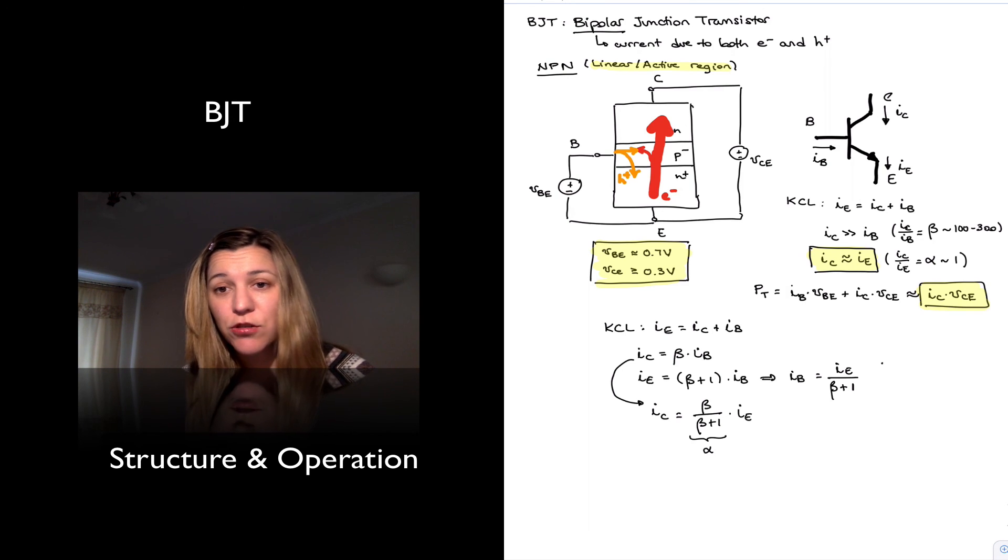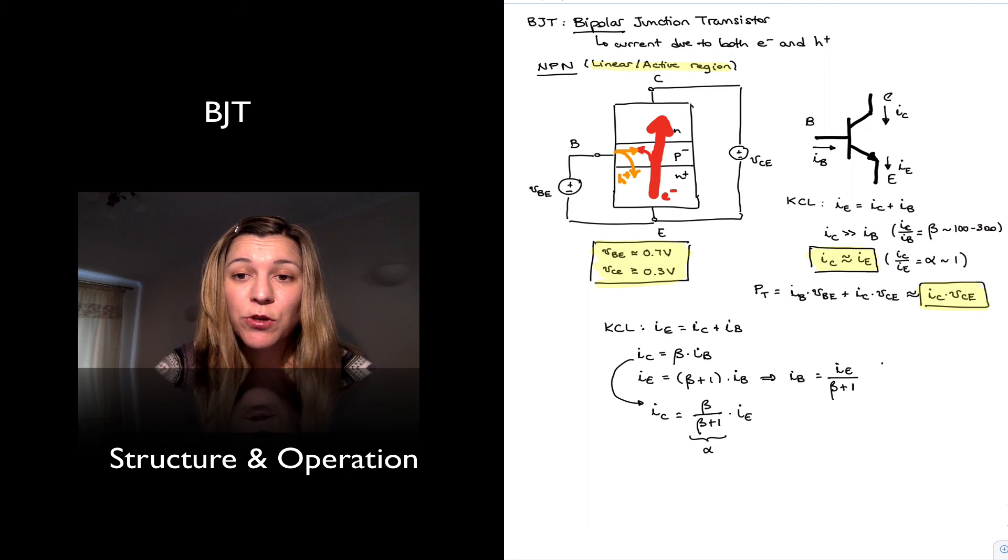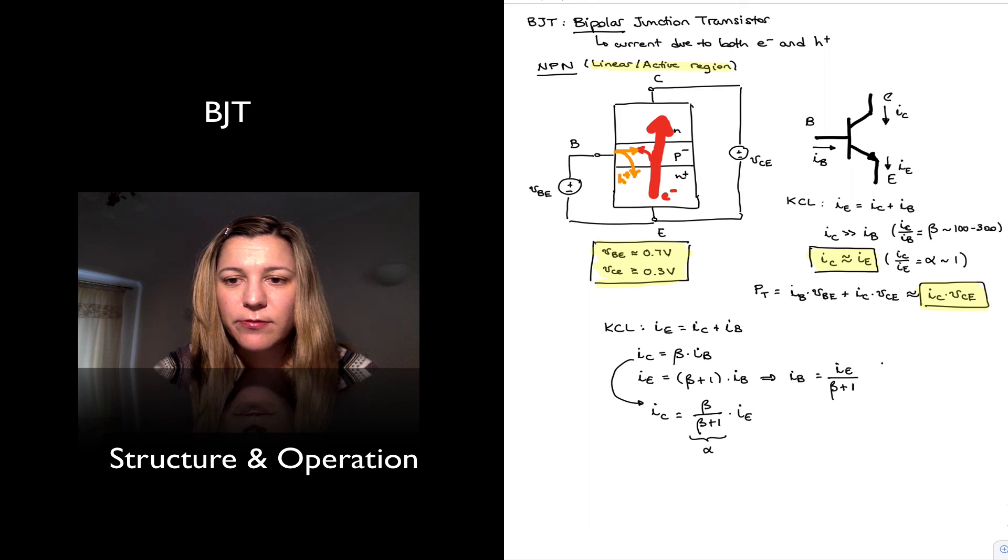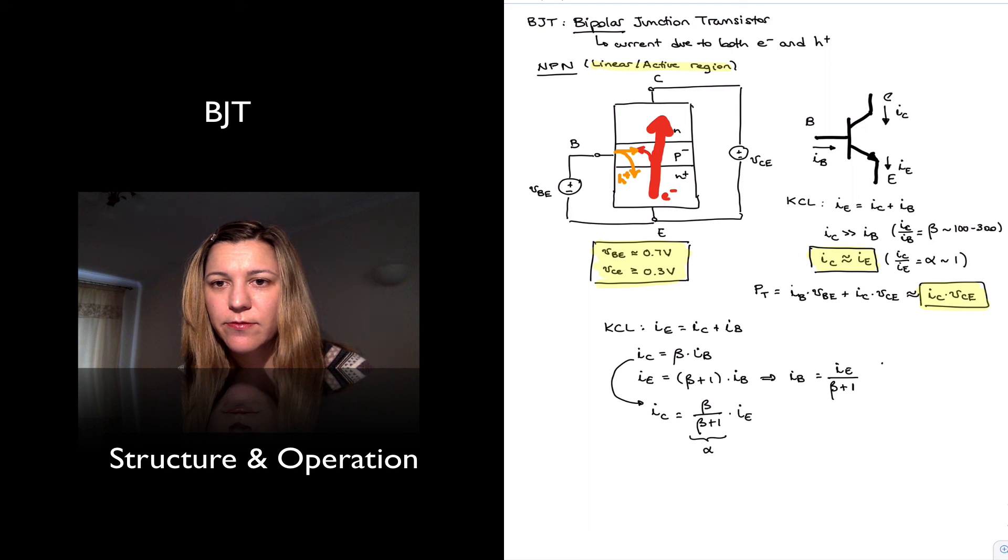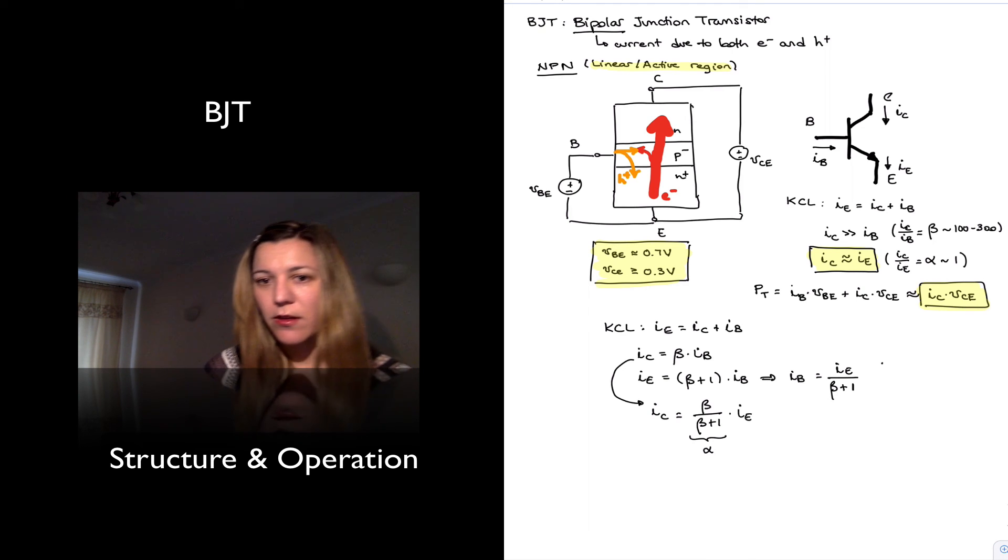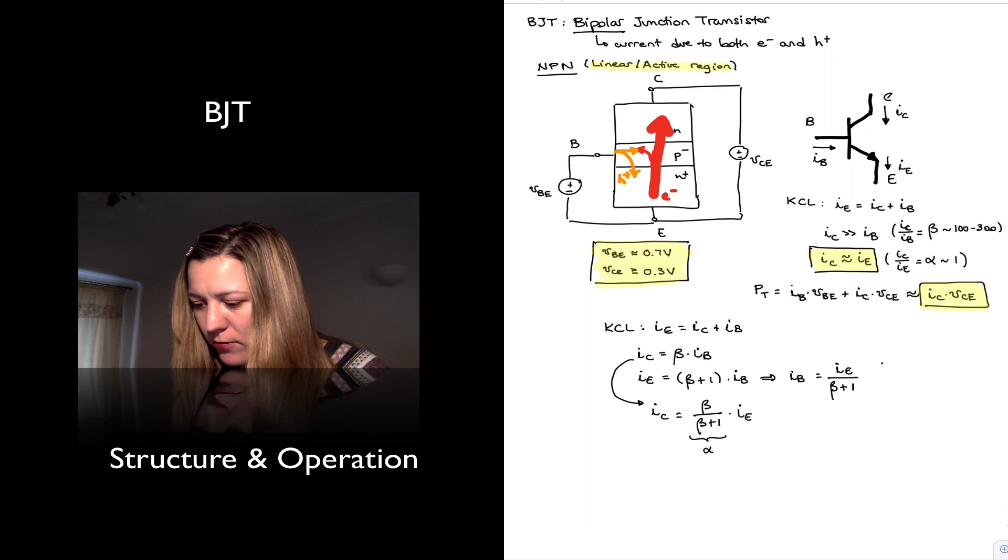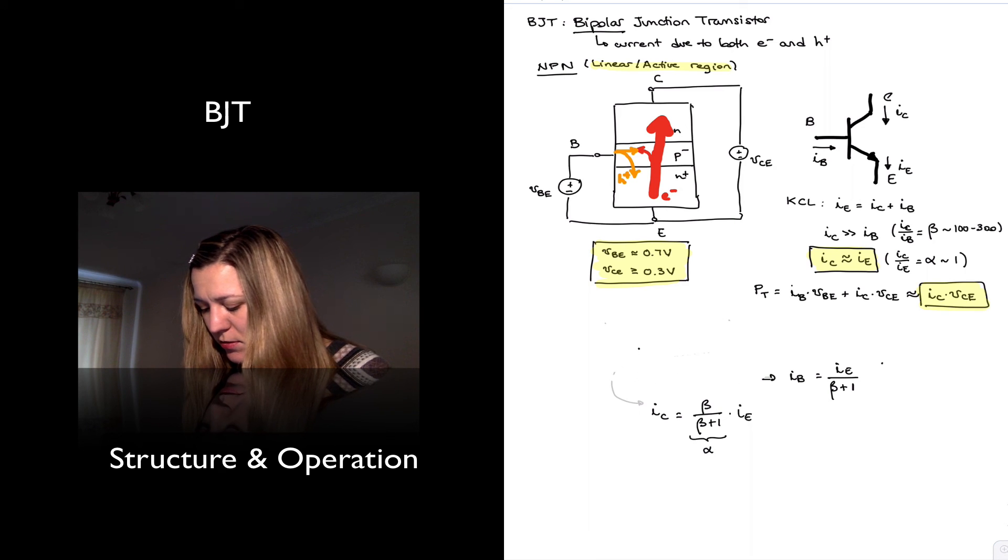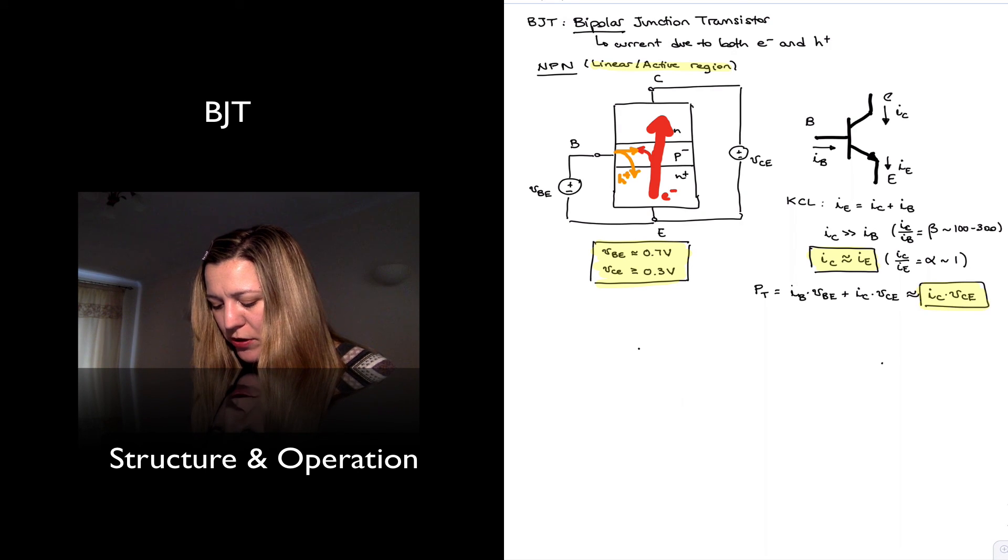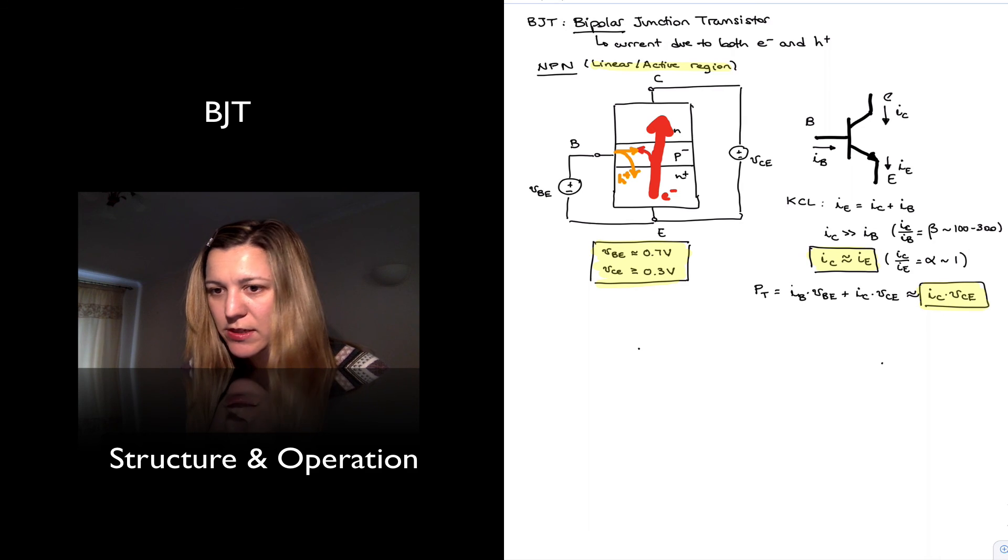Okay, and this is the structure and basic operation in the linear region for the NPN transistor. In the next video, we're going to talk about the PNP transistor, and we'll see it's actually very similar. All right, so we just saw the structure of operation of the NPN transistor in the active or linear region.